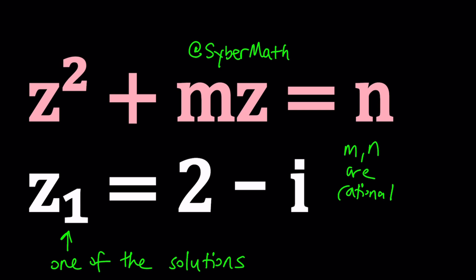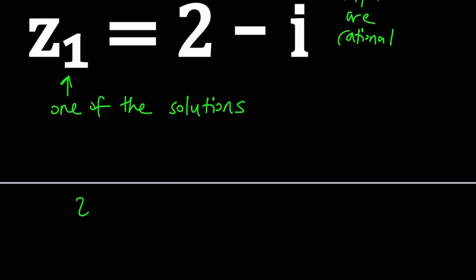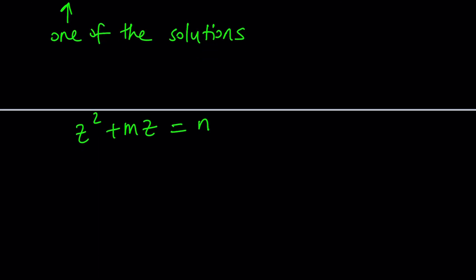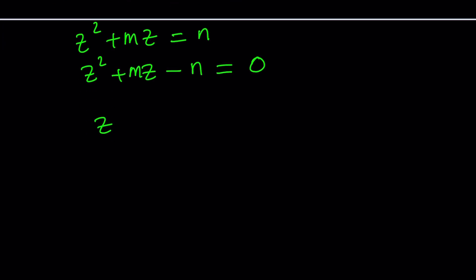So, how do we solve a problem like this? We're given one of the solutions, so maybe we can try to find the other solution, or we can try to solve the equation directly. Let's start with that. We have z squared plus mz, subtract n from both sides. We have this equation and to solve it, we can use the quadratic formula. Negative b plus minus the square root of b squared minus 4ac.